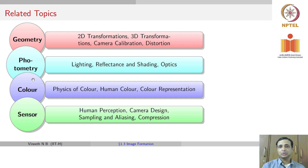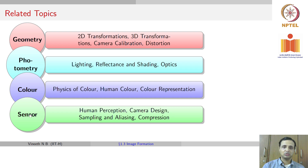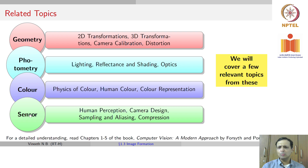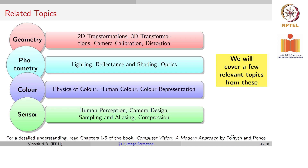From a color perspective, where you study the physics of color, human color, and color representation. And from a sensor perspective, looking at human perception, camera design, sampling and aliasing, compression, and so on. We will not cover all of this, but will cover a few relevant topics from these in this particular lecture. If you are interested in more detailed coverage, please read chapters 1 to 5 of the book by Fawcett and Pons.